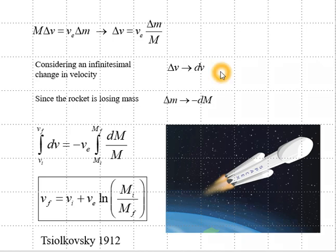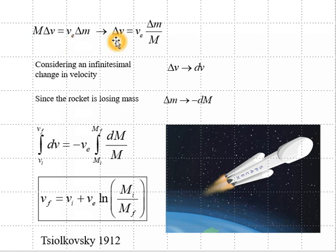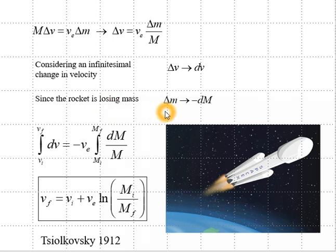We will first consider the change in rocket speed without a gravitational field. Our conservation of momentum equation is M delta V equals VE delta M. Solving for delta V gives delta V equals the exhaust speed times delta M over M. For an infinitesimal change in velocity, we replace delta V by dV, and since the rocket is losing mass, dM of the fuel equals minus dM of the rocket, so dM of the rocket is negative, making this a positive quantity.